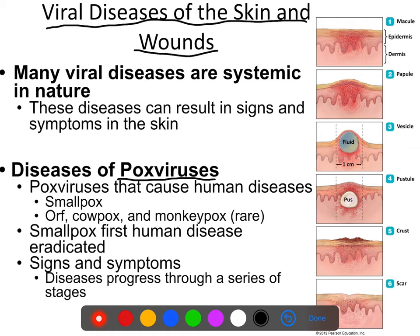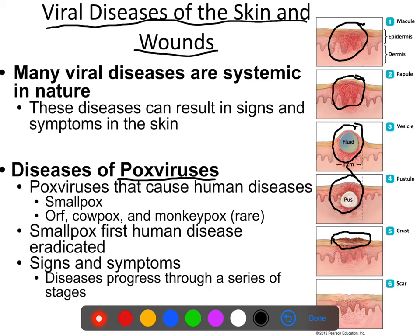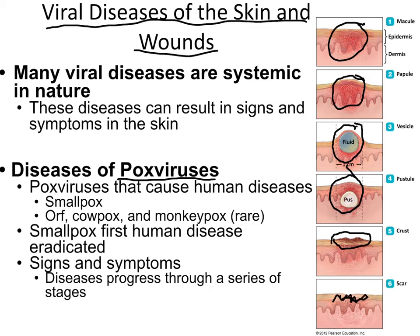Pox diseases progress through several stages. First is the formation of macules — small discolored areas on the surface of the skin. Many diseases progress through these phases: a papule, which is a raised but solid centered bump on the skin; moving to a vesicle or blister, which is a raised fluid-filled blemish; and once that blister fills with pus it becomes a pustule. The pustule eventually bursts, leading to a crust.